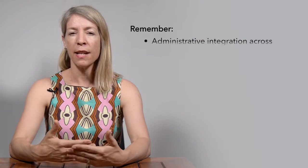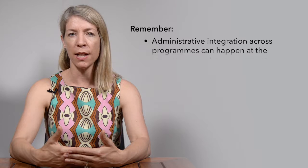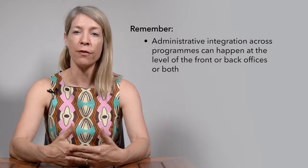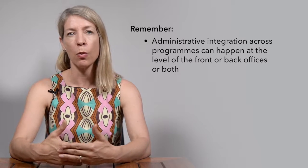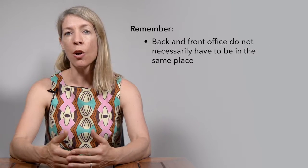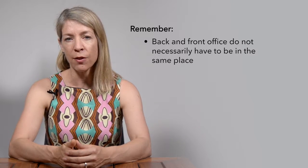Those were just some examples. It's important to remember that administrative integration across programs can happen at the level of the front office or the back office, and that the back and front office activities don't necessarily have to be in the same place. Now that you are familiar with horizontal coordination of social protection, we will discuss vertical coordination.